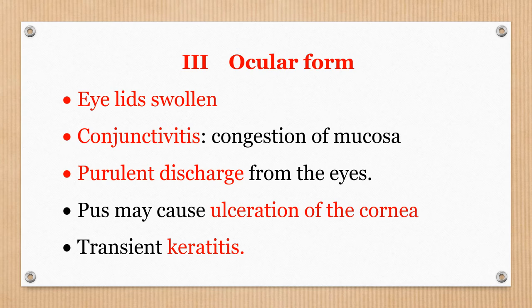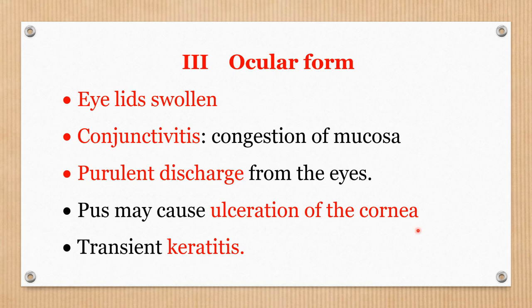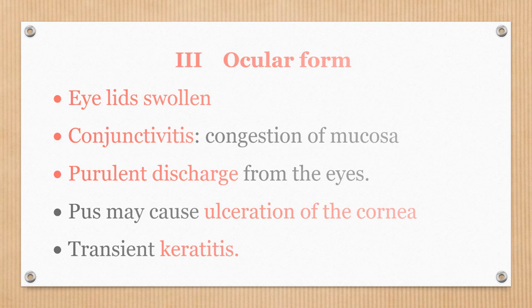The third form is the ocular form, where the eyes are involved. The eyelids are swollen and clearly visible from a distance. There is congestion of the mucous membranes of the conjunctiva — conjunctivitis. Pus may cause ulceration of the cornea and opacity of the cornea. There is temporary or transient keratitis manifested by cloudy whiteness of the cornea — the cornea becomes white.